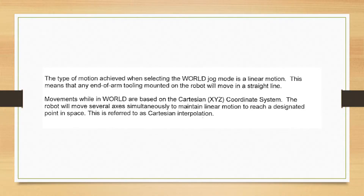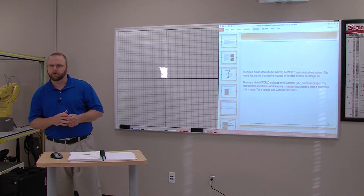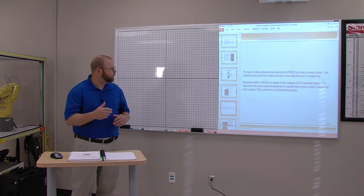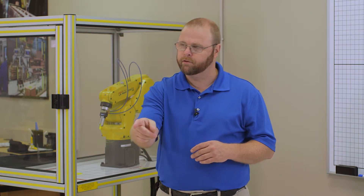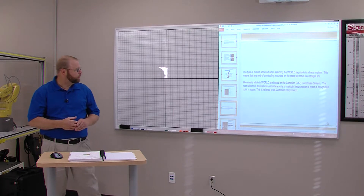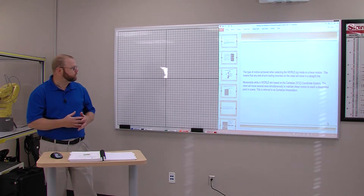The type of motion achieved when selecting the world jog mode is linear motion. This means any end-of-arm tooling mounted on the robot will move in a straight line. If we're in the world coordinate system and jogging the robot in X positive, it's going to travel in a straight line, maintaining whatever position it's in at the time. Z and Y work the same way. Movements in the world are based on the Cartesian coordinate system — X, Y, and Z.